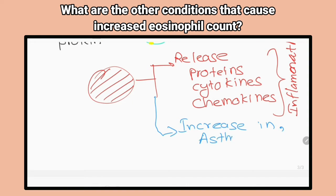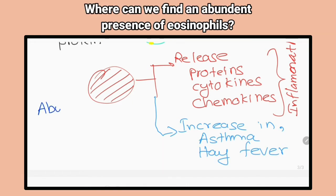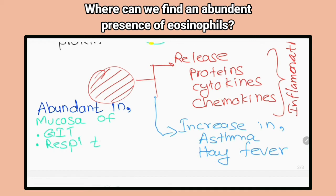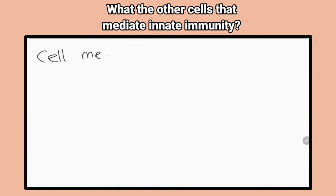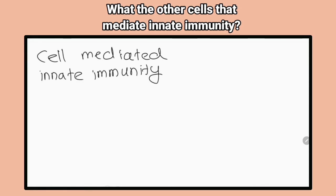What are the other conditions that cause increased eosinophil count? In allergic diseases such as asthma and hay fever. Where can we find an abundant presence of eosinophils in the body? In the mucosa of gastrointestinal, respiratory and urinary tracts.